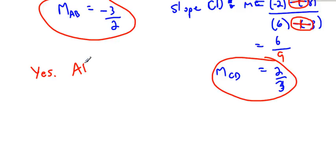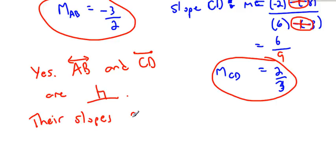So yes, they are perpendicular. So line AB and line CD are perpendicular. Hey, look, the symbol for perpendicular. Why? Their slopes are negative reciprocals.